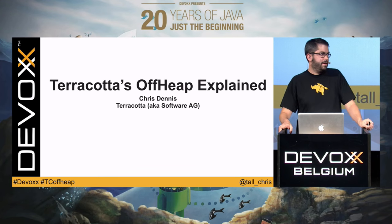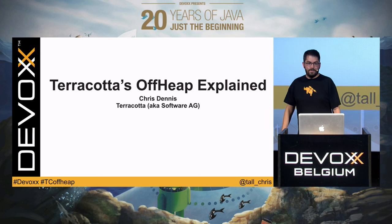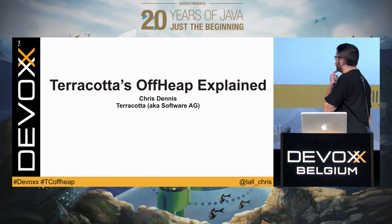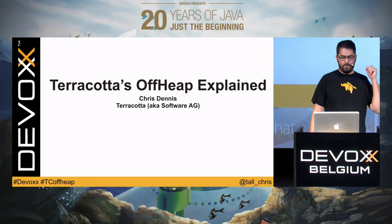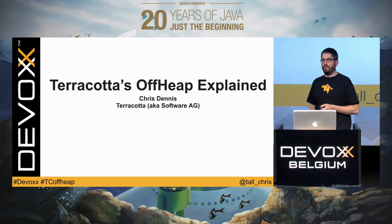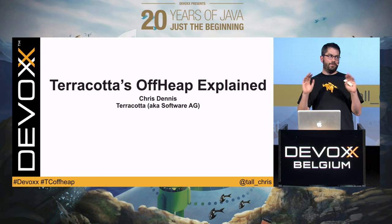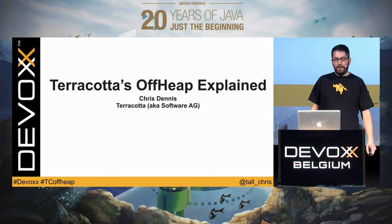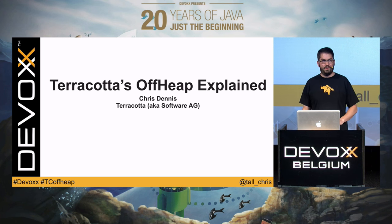Good afternoon, or evening, or whatever you want to call this. My name is Chris Dennis — it says on the slide. I work for Terracotta, otherwise known as Software AG. I'm going to try and do about 45 minutes, give or take. I've never done this talk before. Whatever you want to ask at the end, open season. I wrote most of this library, so I should know the answer, and if I don't, then I'm a bad developer.